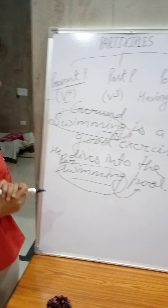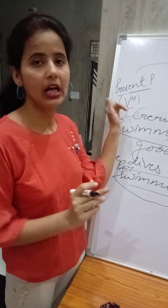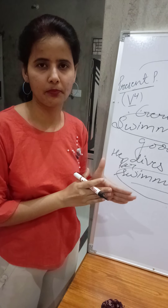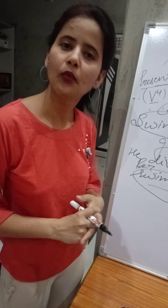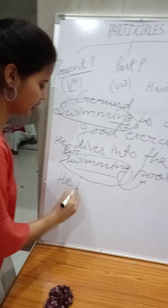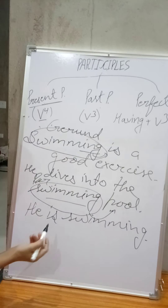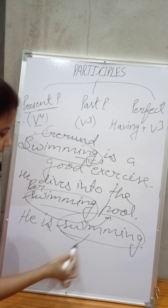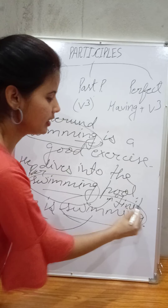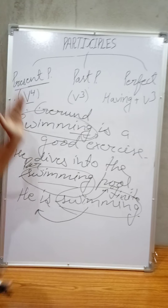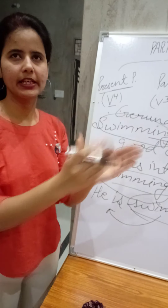Now the finite verb. Finite verb also consists of V4. How do you identify finite verbs? If the V4 is preceded by any continuous helping verb, then the verb will be a finite verb. Look at the example: he is swimming. Just before swimming, there is the helping verb of continuous tense, so here 'swimming' will be called a finite verb.